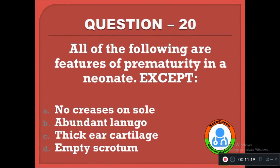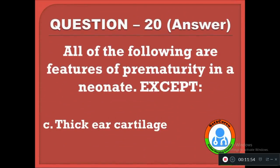Question 20: All of the following are features of prematurity in a neonate except — option A: no creases on sole, B: abundant lanugo, C: thick ear cartilage, D: empty scrotum. The correct answer is C, thick ear cartilage. Features of prematurity include no creases on sole, abundant lanugo, and empty scrotum. A premature neonate will have thin ear cartilage, not thick.